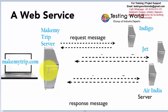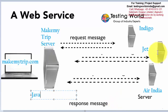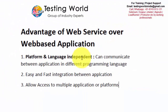In the same way, it is language independent. MakeMyTrip's application might be developed in Java and a Jet Airlines application in .NET, but we are still communicating between the two applications through a common data exchange mechanism — it could be JSON or XML. XML is the same for Java as well as .NET, so there is no impact of their programming language. Web services are platform and language independent, so we can easily integrate two or more applications together.